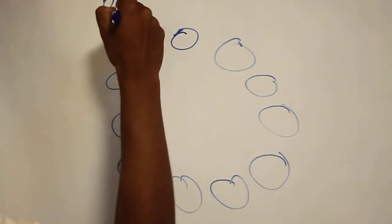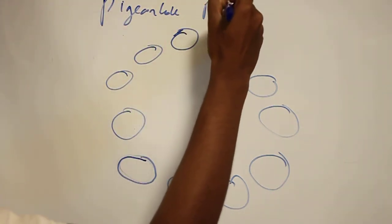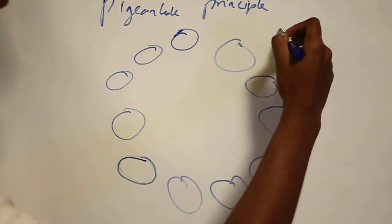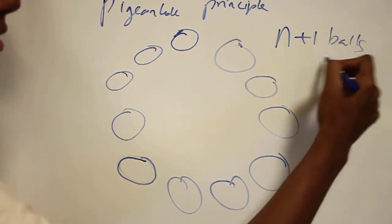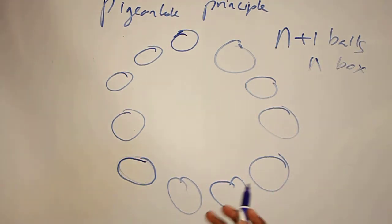the way you show it is using this principle called Pigeonhole Principle, which is a great principle that you can apply to solve a lot of different puzzles and math problems. It basically states that if you have n plus one balls and you have n boxes, then there must be a box that has more than one ball. It seems pretty obvious.